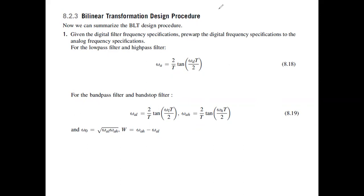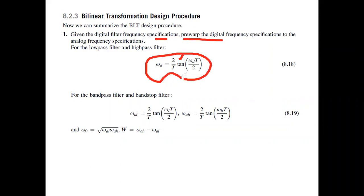As a solution, what we have to do is negate the effect of the tan inverse thing by applying a tan function to the frequencies. In the bilinear transformation, the first step would be: given the digital specification, pre-warp the digital specification to the corresponding analog frequency specification. The first thing you will be doing is applying this particular formula.